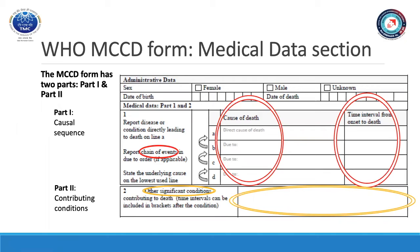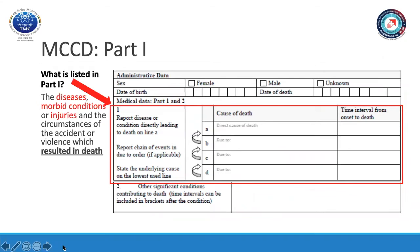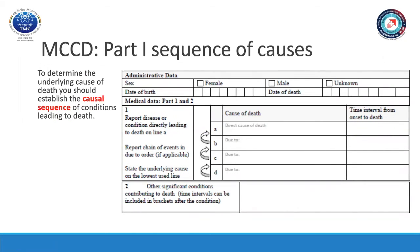On the WHO MCCD form, the medical data section has two parts: Part 1 and Part 2. Part 1 includes lines to report the causal sequence and the time interval of each reported condition. The causal sequence means the medical conditions that occurred as a chain of events leading ultimately to death. Part 2 is the area to report other significant conditions that contributed to death but are not part of the causal sequence. In Part 1, you report the diseases, morbid conditions or injuries and the circumstances of accident or violence which resulted in death. To determine the underlying cause of death, you should establish the causal sequence of conditions leading to death — the chain of events that ultimately leads to death.